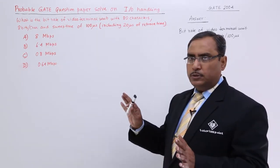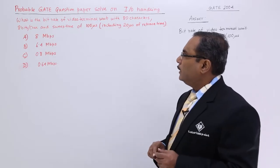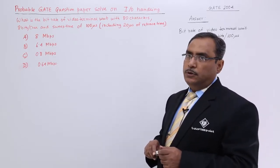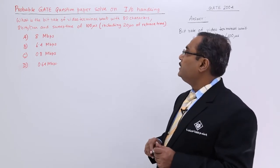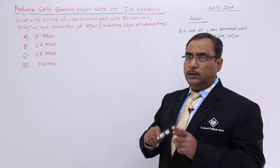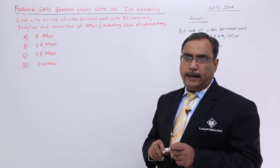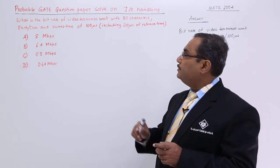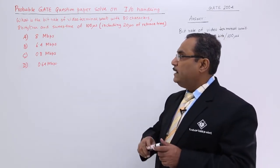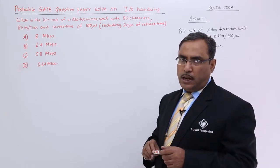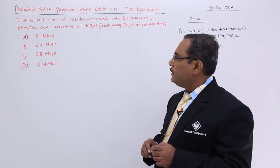Now see, very simple question, not a very big deal. What is the bit rate of video terminal unit? This is a video terminal unit with 80 characters, that means on the screen we can display 80 characters at a time, 8 bits per character. Obviously, we know that 80 characters into 8 bits per character, if you go, then I can get the total amount of screen display data unit.